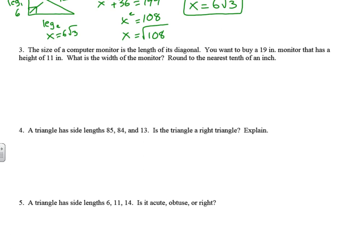The size of a computer monitor is the length of its diagonal. You want to buy a 19-inch monitor that has a height of 11 inches. What is the width of the monitor? A computer monitor is a rectangle, so we know this forms a right triangle. The diagonal is the hypotenuse, which is 19 inches. The height is 11 inches, which is one leg, and the width — call it 'a' — is the other leg.